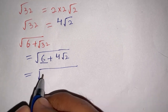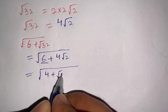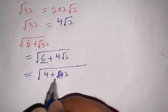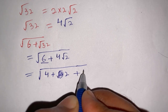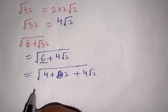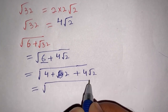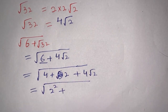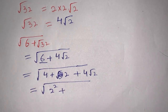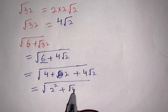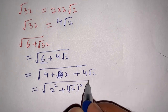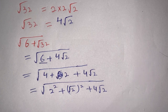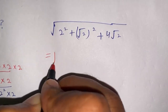We can write 6 as 4 plus 2. So the expression becomes square root of 4 plus 2 plus 4 times square root of 2. Now 4 can be written as 2-squared, and 2 can be written as square root of 2 whole squared. So we have square root of 2-squared plus square root of 2 whole squared plus 4 times square root of 2.